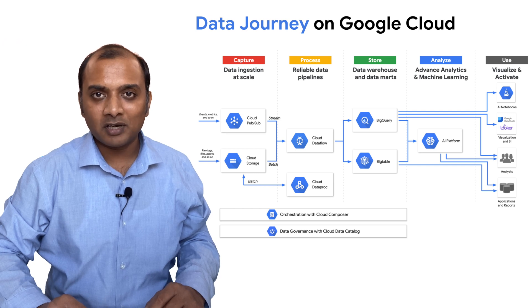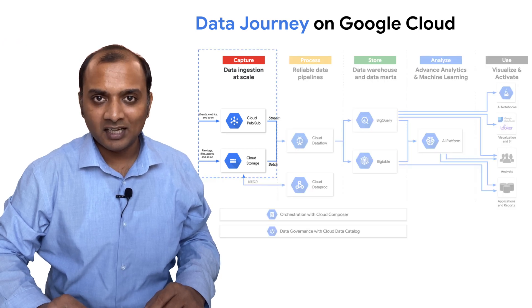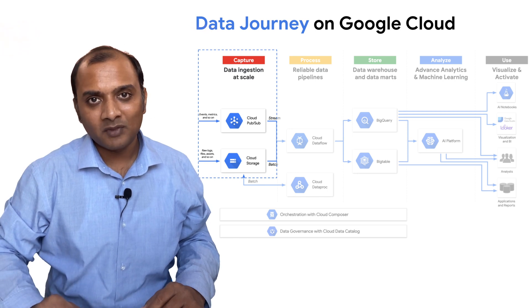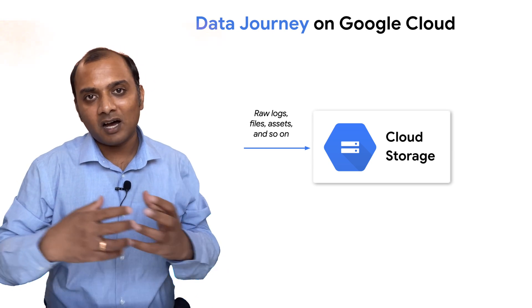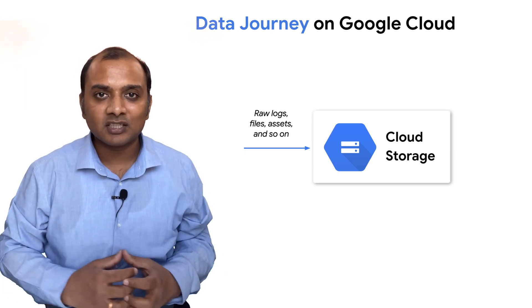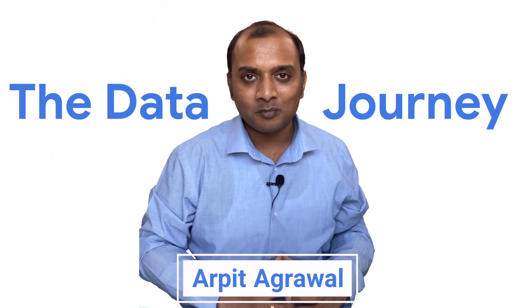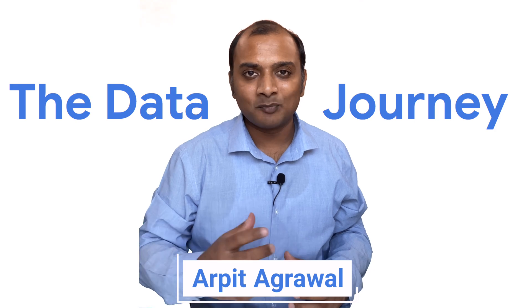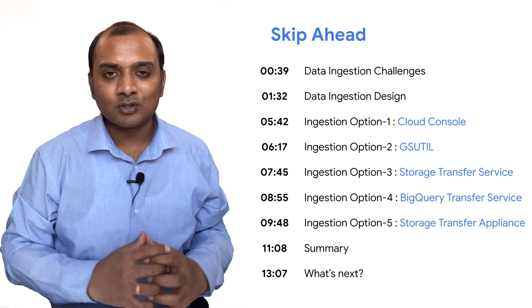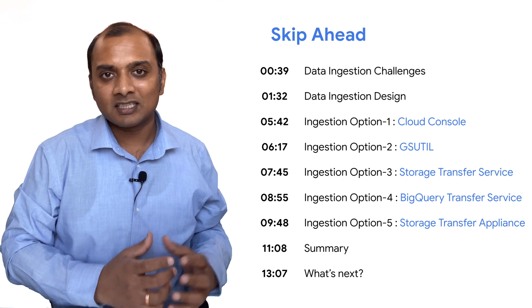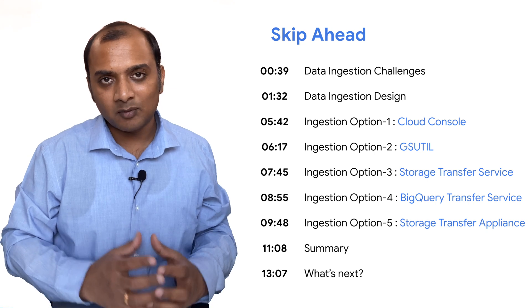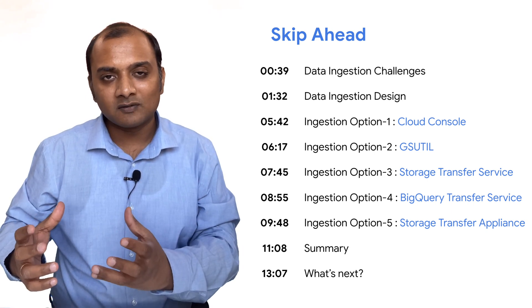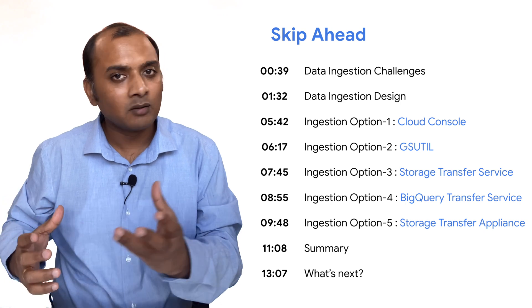The first step of a data pipeline is data ingestion and that is exactly what we're going to be talking about today. We're going to be talking about batch data ingestion, which means ingesting files into a staging area so that we can run analytics on top of it. The place where we're going to be ingesting all these files is Google Cloud Storage, well in most cases.